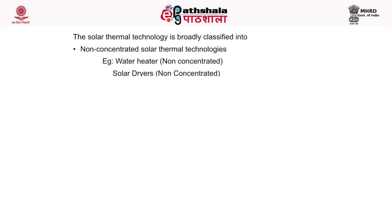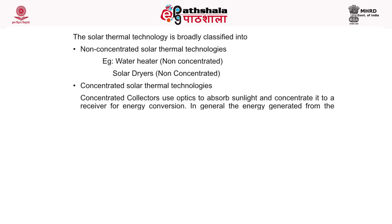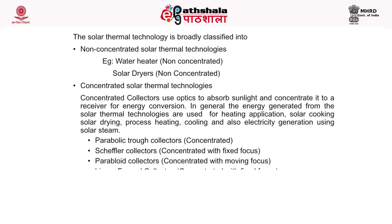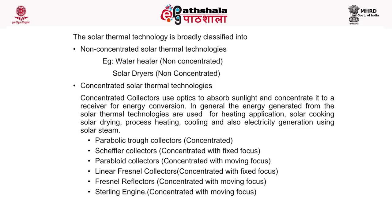Solar thermal technology is broadly classified into non-concentrated and concentrated. Non-concentrated solar thermal technologies include water heaters and solar dryers. Concentrated solar thermal technologies use optics to absorb sunlight and concentrate it to a receiver for energy conversion. The energy generated is used for heating applications, solar cooking, solar drying, process heating, cooling, and electricity generation using solar steam. Examples of concentrated solar thermal technologies include parabolic trough collectors, Scheffler collector, paraboloid collectors, linear Fresnel collector, and Stirling engine. Solar cookers use both concentrated and non-concentrated thermal technology.